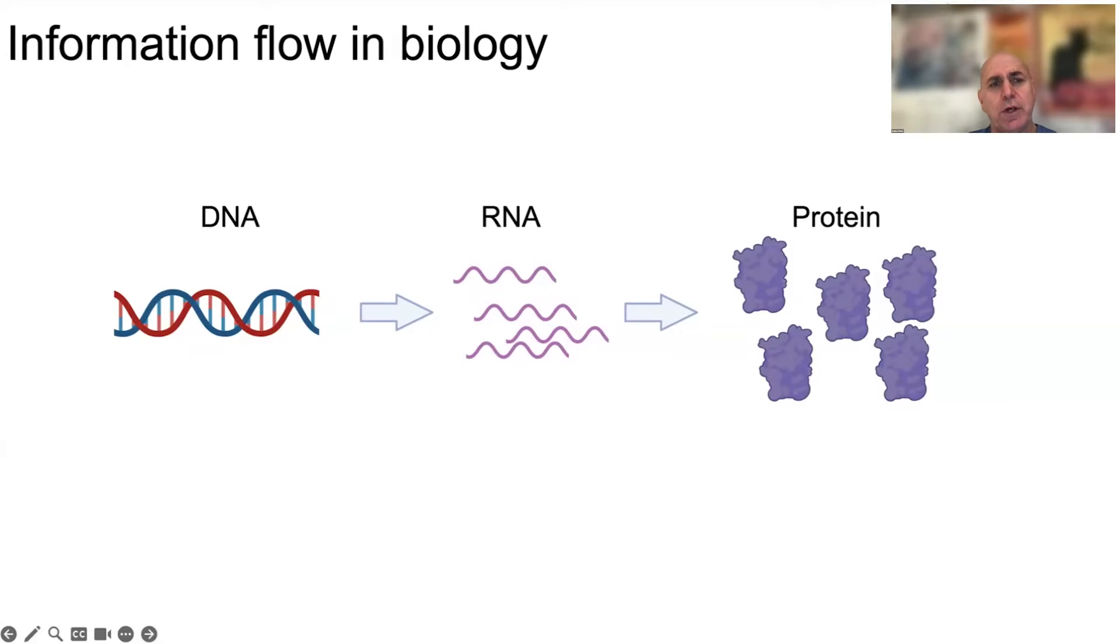Effectively, the information flows from DNA, which is then transcribed into RNA, which is then translated into proteins, and the proteins interact in order to deliver an outcome. This fundamental process in biology is one of the starting points for why we need multiple ways of looking at omics information.